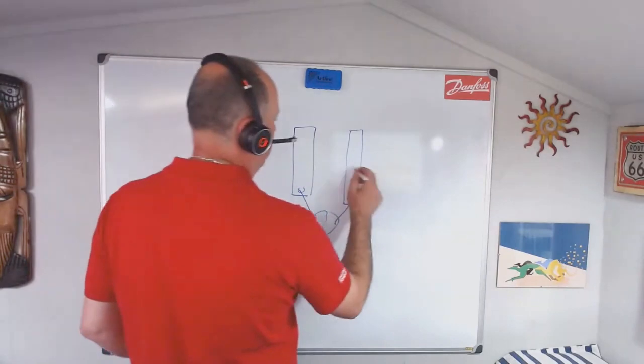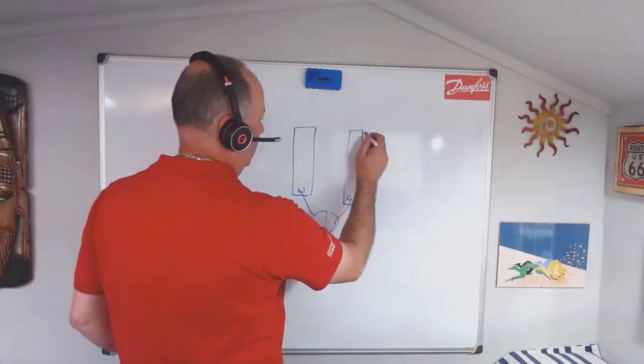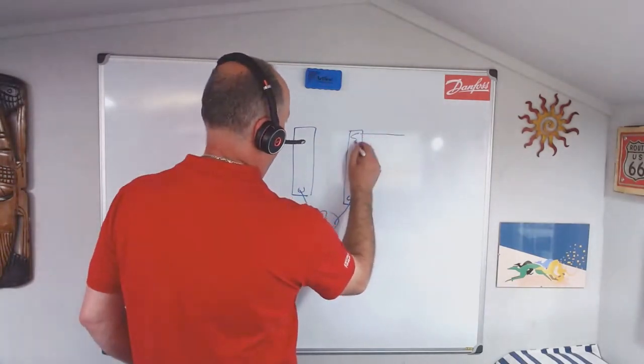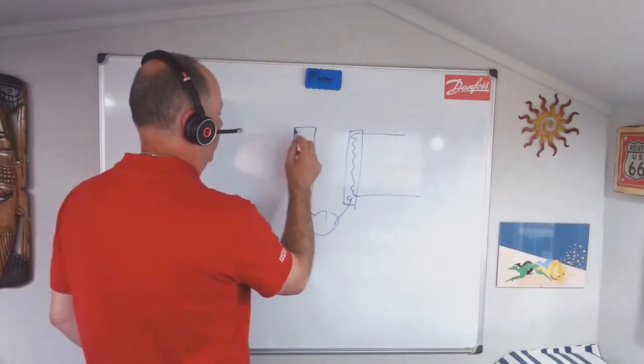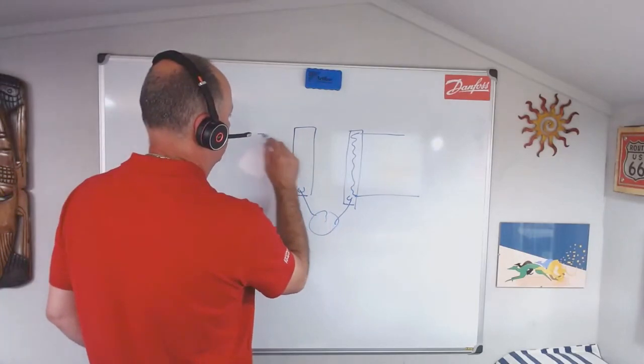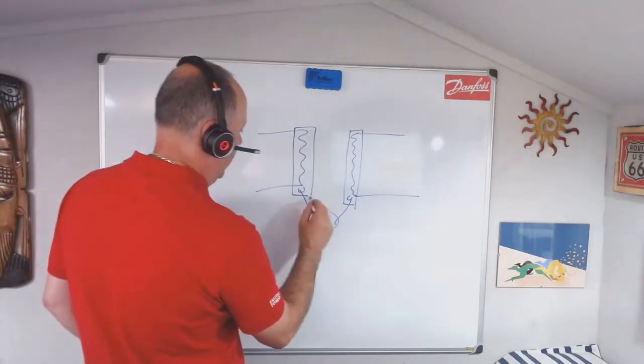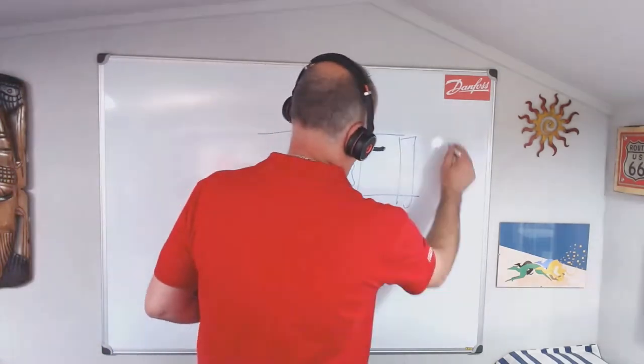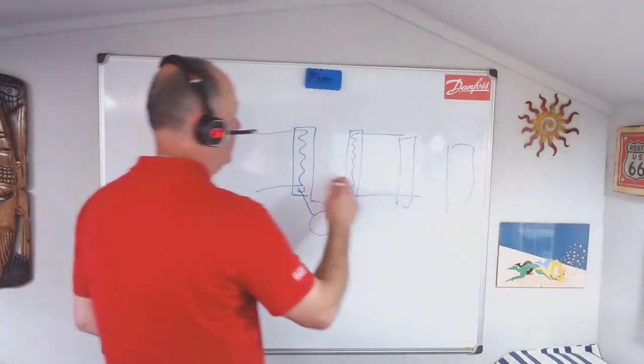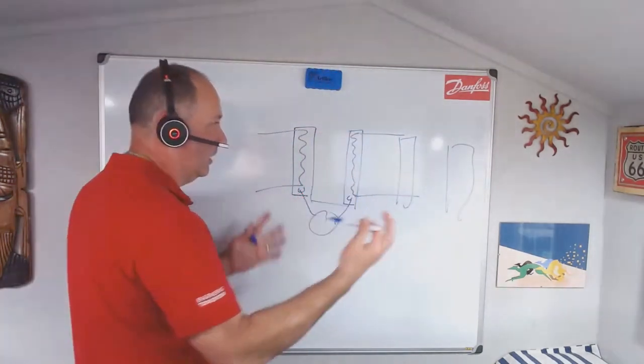You have an evaporator or it can be a fluid. Normally it's a fluid but some of them are DX. These plates, normally there's multiple plates stacked, and you put your product, normally fish.